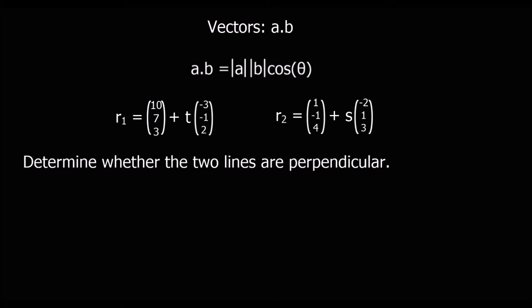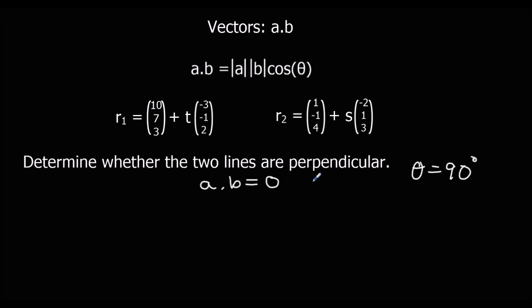We can also use a·b to find whether two lines are perpendicular. If two lines are perpendicular, the angle between them is 90 degrees, so theta equals 90. And if theta equals 90 degrees, cos 90 is 0. So we'll have mod a times mod b times 0, which will be 0. So if two lines are perpendicular, a·b is 0.